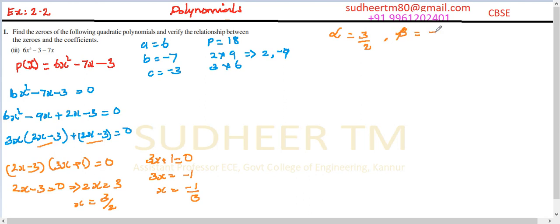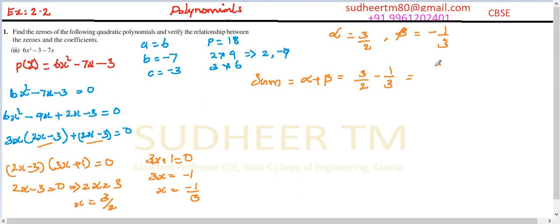Now, alpha plus beta equals 3/2 plus (minus 1/3), which is 3/2 minus 1/3. The LCM is 6. Using the butterfly method: 3 times 3 is 9, minus 1 times 2 is 2, divided by 6, giving 9 minus 2 equals 7, so the sum is 7/6.